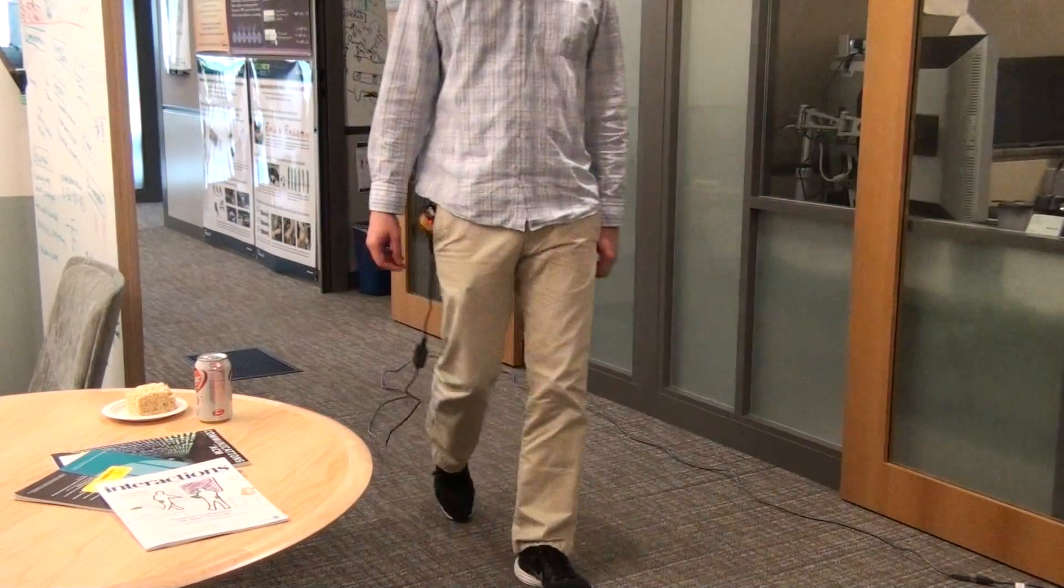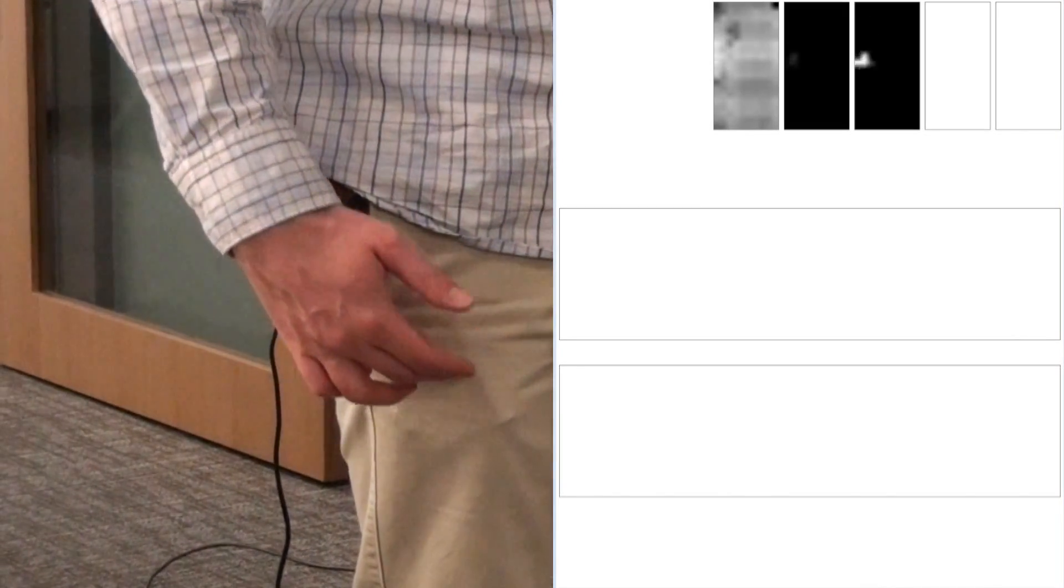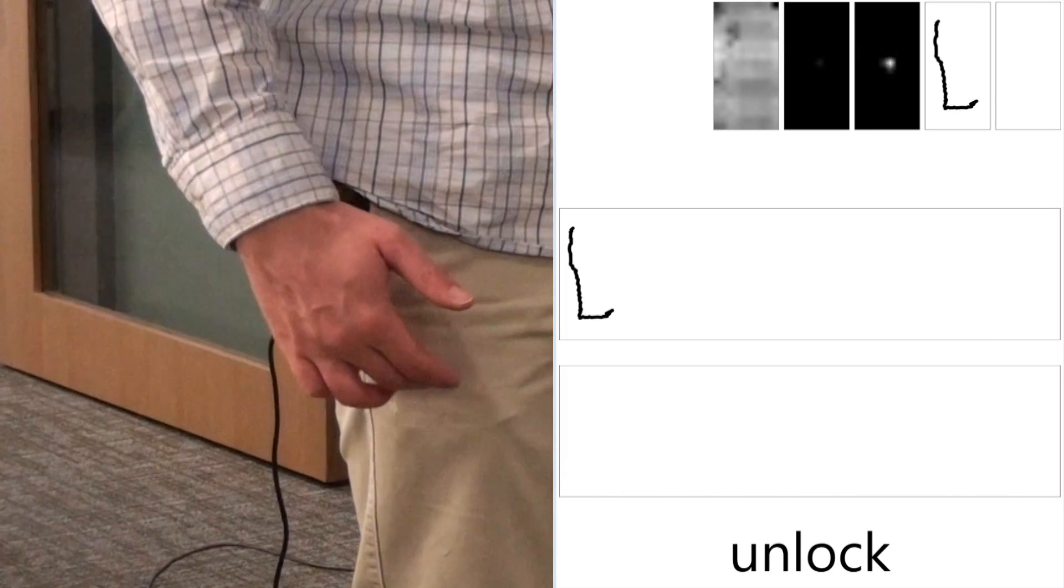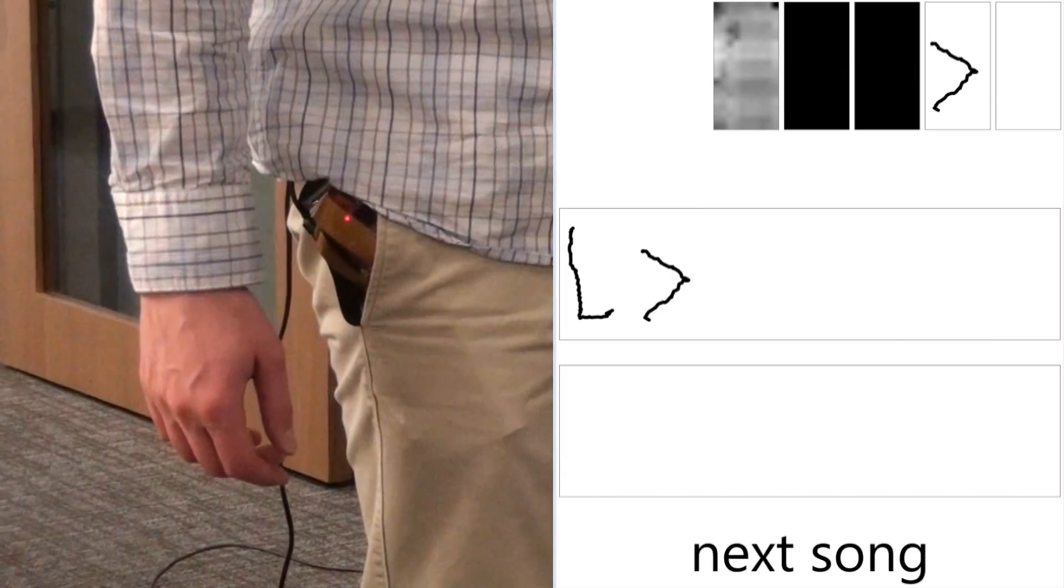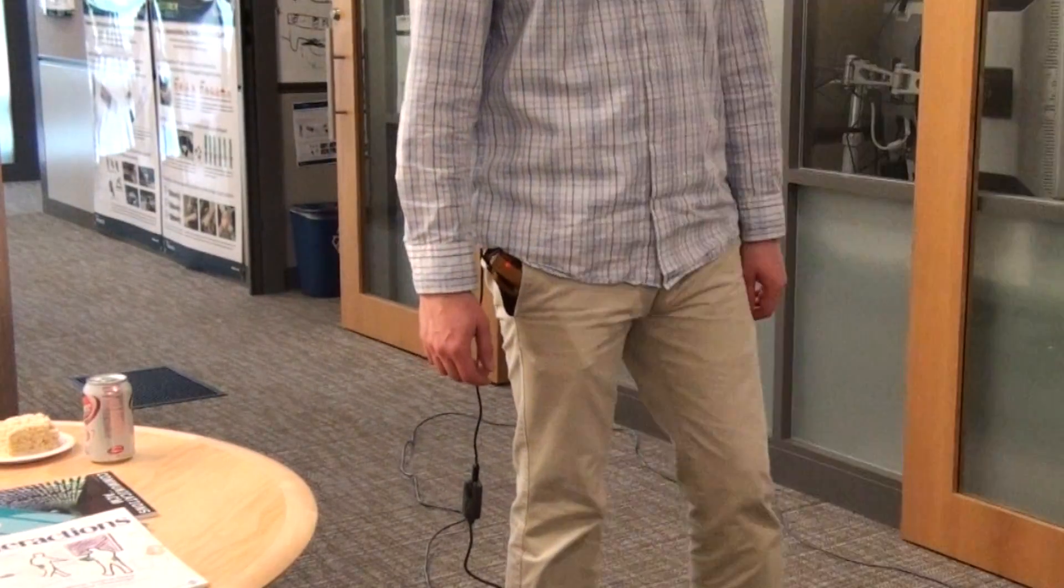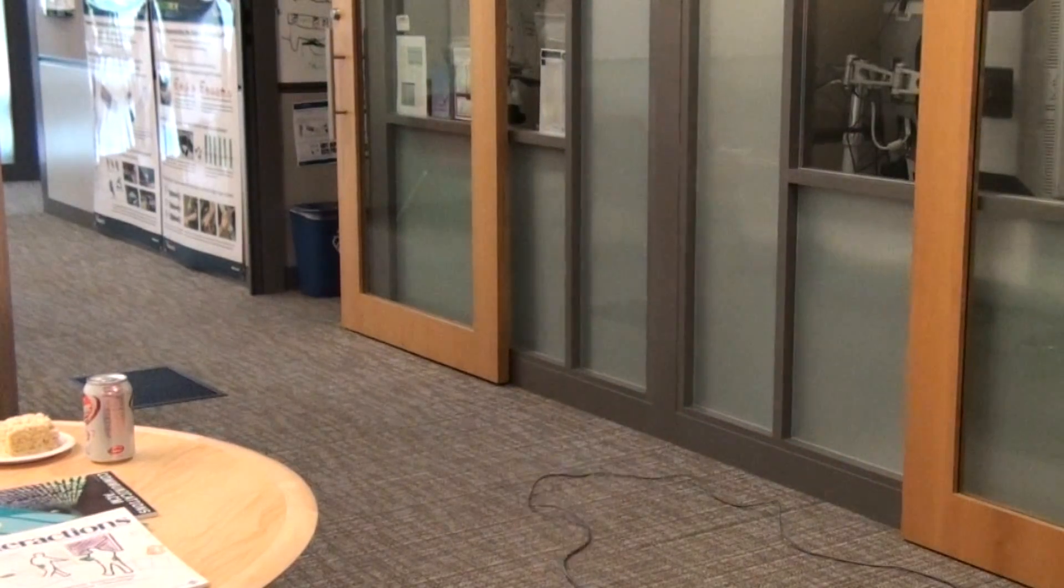Pocket Touch facilitates a rich set of gestural interactions based on a sequence of one or more touch strokes through the fabric of a garment. For example, a user can control a music application with simple stroke commands.